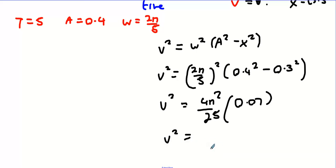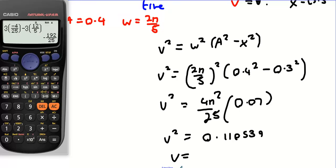When you log down to the calculator, and finally v will be the square root of that. I'll just check that out actually: 4π² divided by 25 multiplied by 0.07, make sure everything's cool, yes it is.